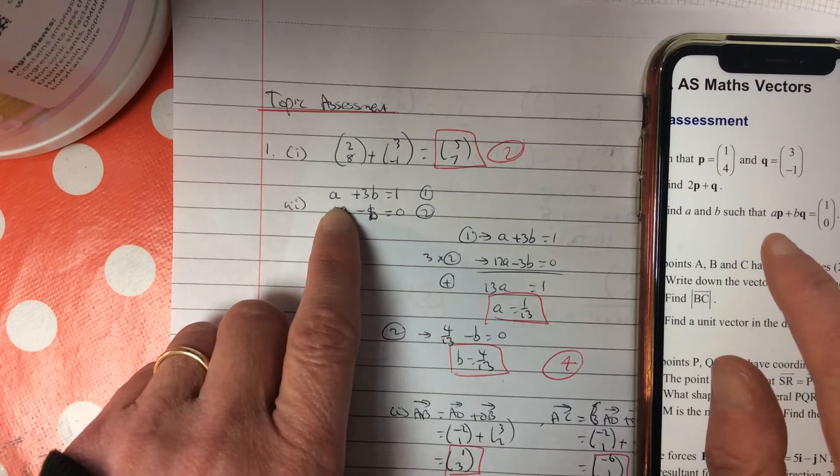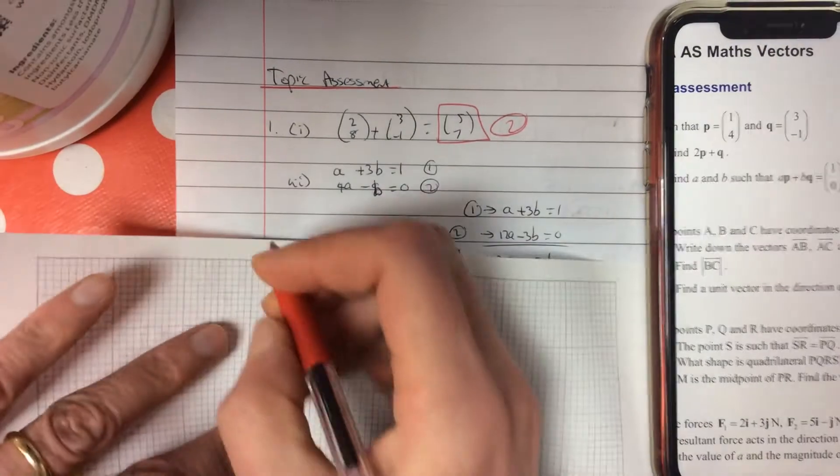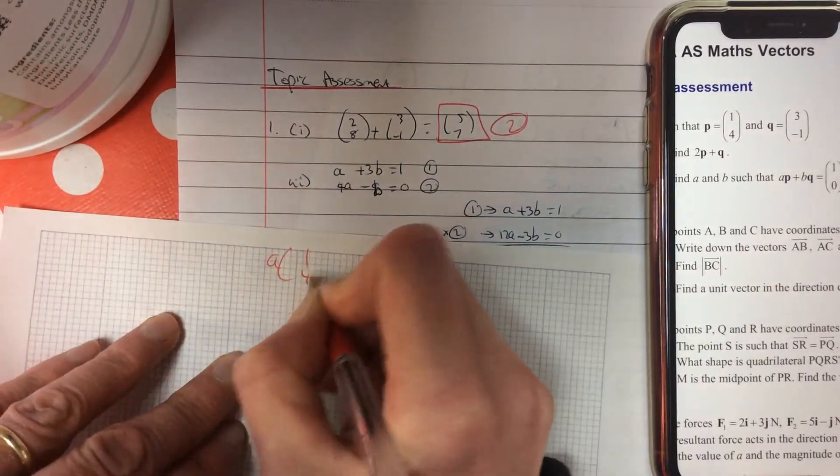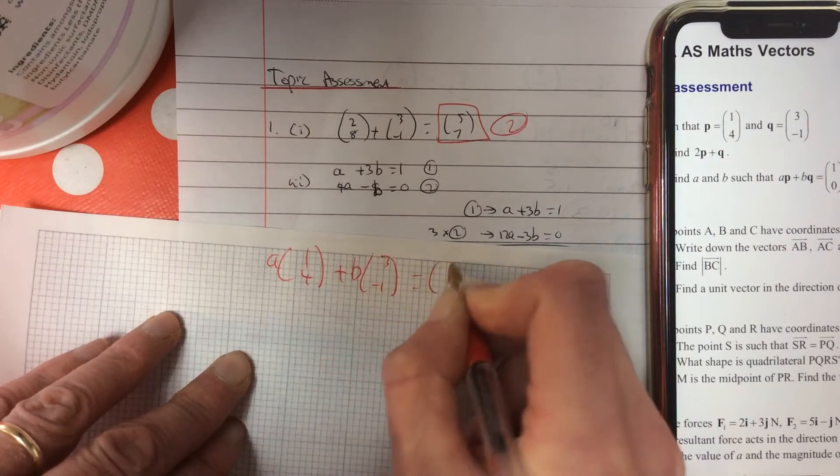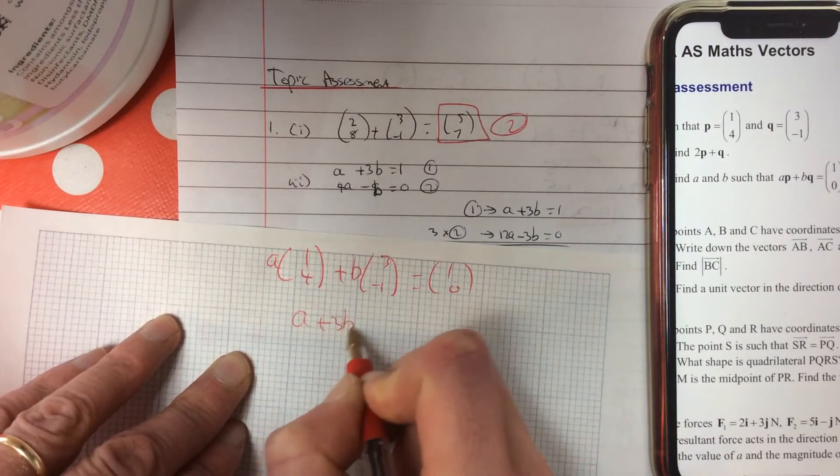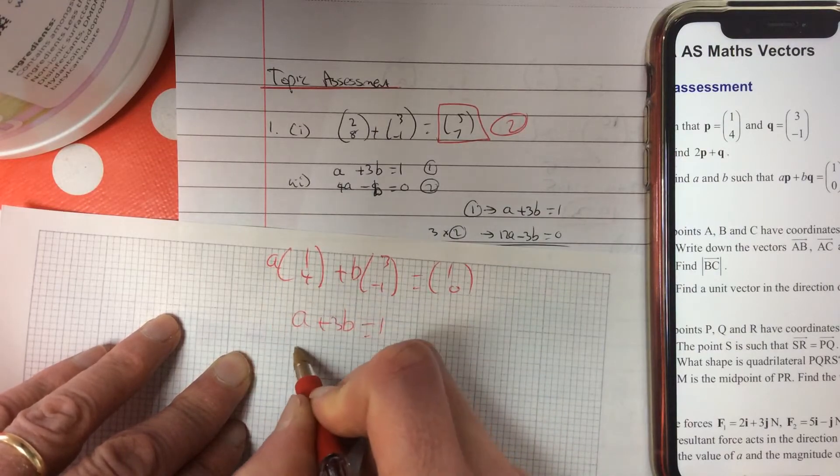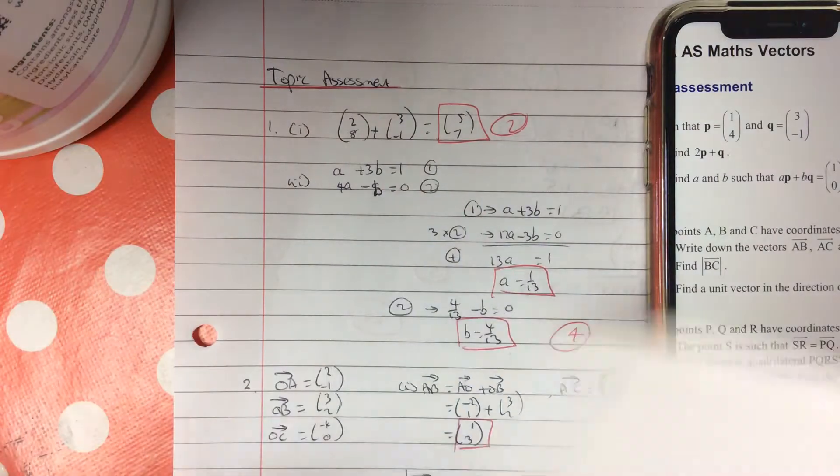it's A times your P. I'll just put this in here. So it's A times your P plus B times your Q equals 1, 0. So just do the I's, the top line, and do the J's, the bottom line, and then just solve them simultaneously.